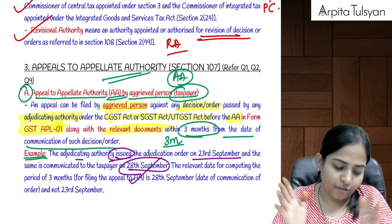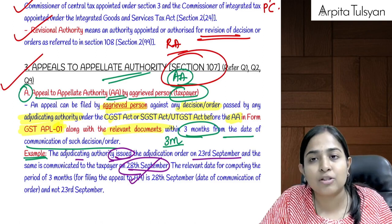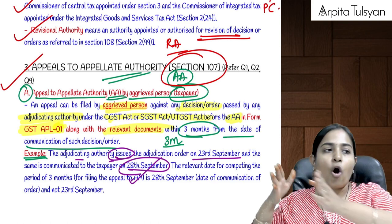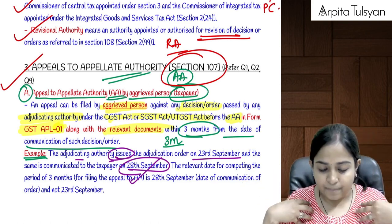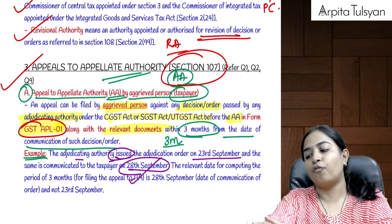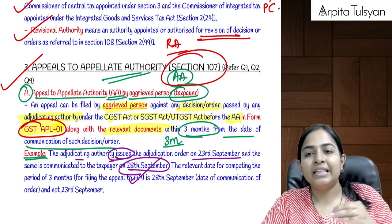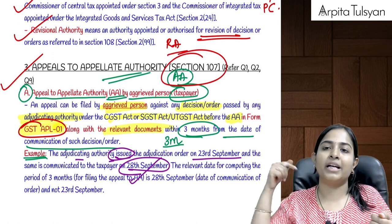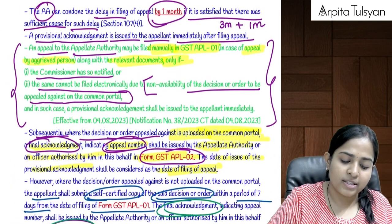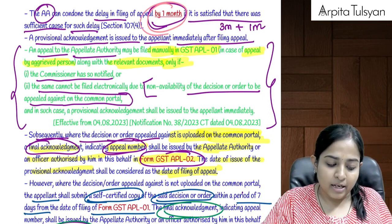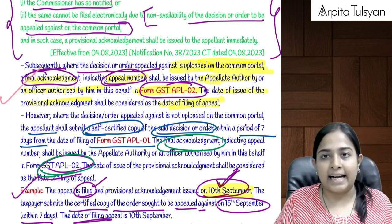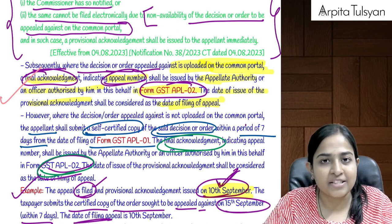Section 107 talks about appeals to the appellate authority. Appeal can be filed either by the taxpayer or the department. If filed by the taxpayer, it is in form GST APL-01, within three months from the date of communication of the adjudicating authority's order. If there is sufficient cause, delay can be condoned by one month.